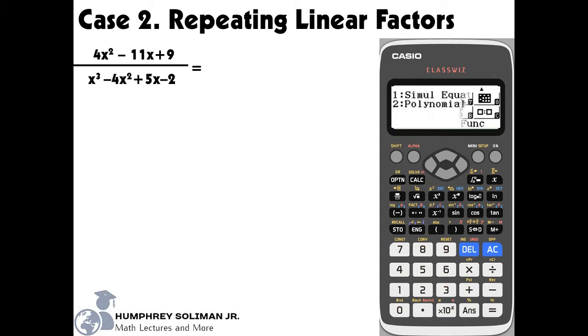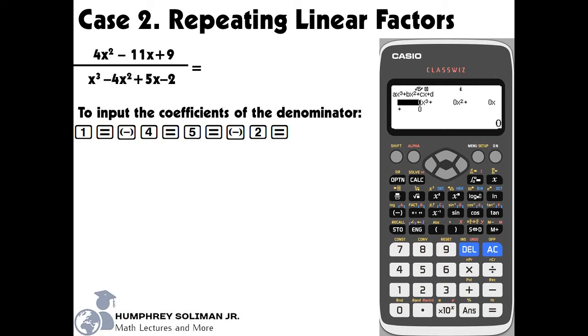Second, we will choose option number 2, polynomial. Since our denominator is a polynomial in the third degree, we will input our desired degree, 3. We are now ready to input the coefficients and constant term of our denominator.